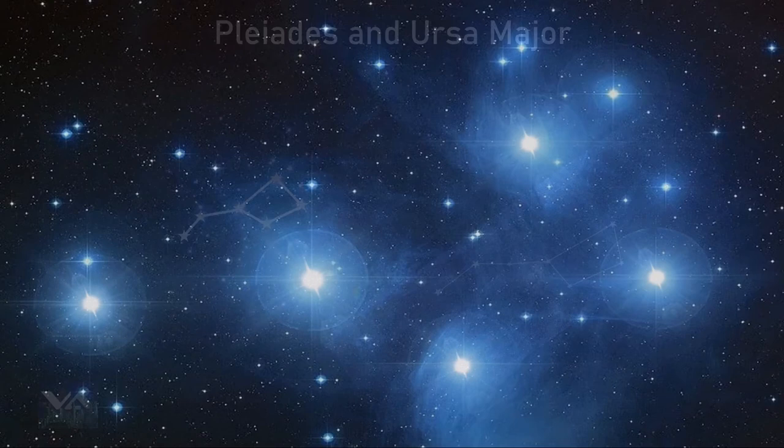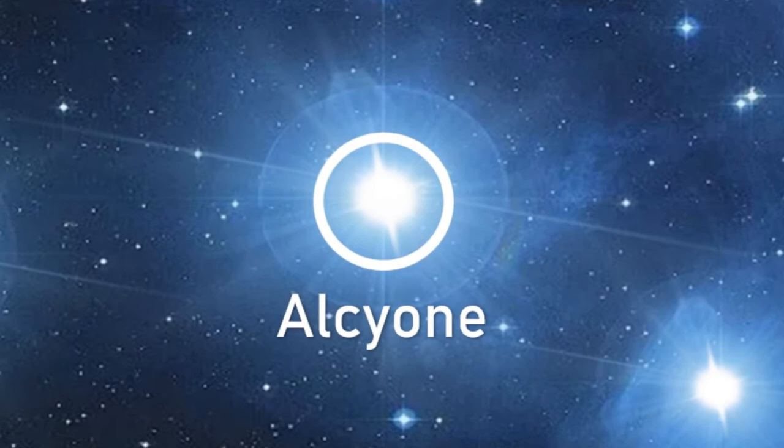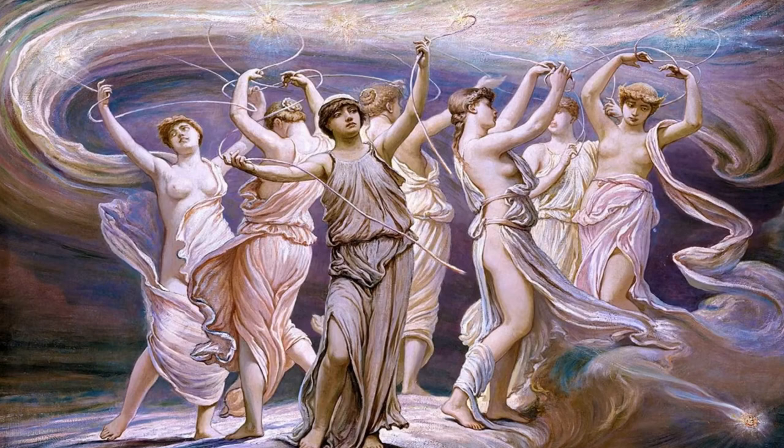The largest star, which has the designation Eta Tauri, is known as Alcyone. Like all the stars in the Pleiades, it's approximately 440 light years from the sun, and is a blue-white B-type giant, similar to other bright B-type stars in the Pleiades cluster.